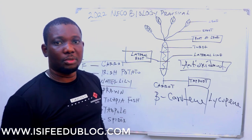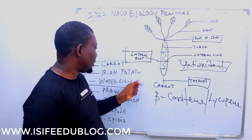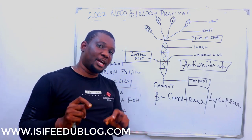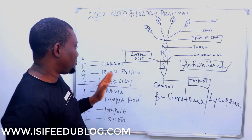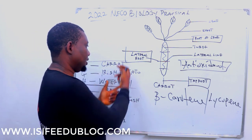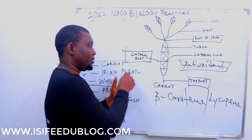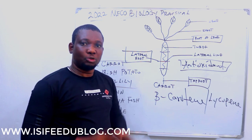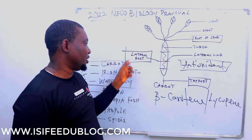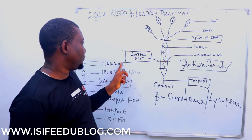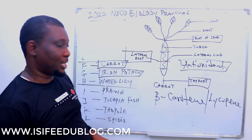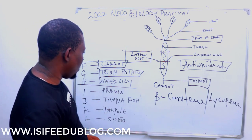Irish potato is specimen G. You just need to be able to identify it. The similarity between carrot and Irish potato is that both are tubers. However, Irish potato is a tuber crop, not just a vegetable, whereas carrot is a vegetable tuber. In terms of food class, carrot provides vitamins, while Irish potato provides carbohydrates, just like other starchy crops.